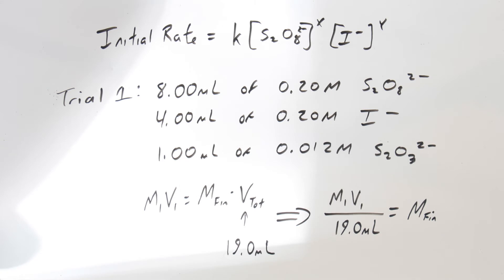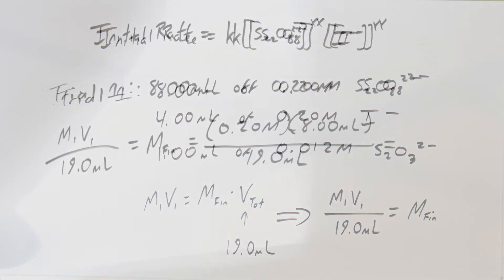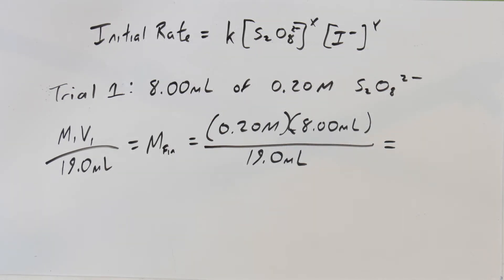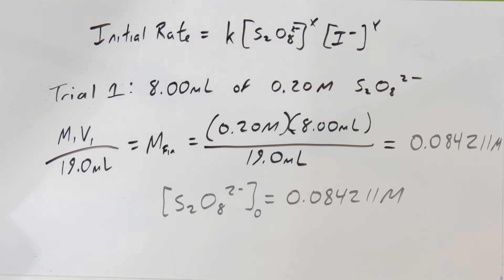Here's what that looks like. For the first trial, we had 8 mL of 0.20 molar persulfate anion, 4 mL of 0.20 molar iodide anion, and 1 mL of 0.012 molar thiosulfate anion. Worth noting: the thiosulfate amount is exactly the same in every trial. Using the dilution formula with a final volume of 19 mL, the initial persulfate concentration works out to roughly 0.084 molar.